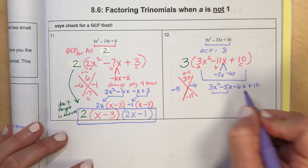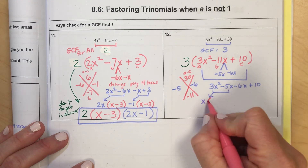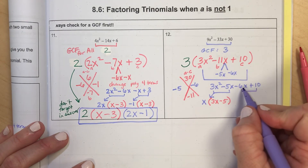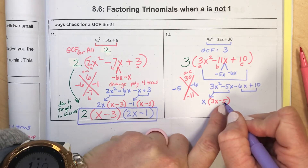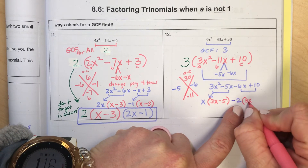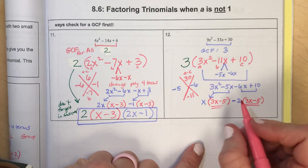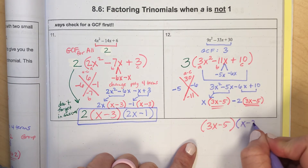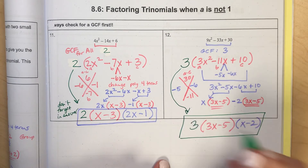So the polynomial becomes 3X squared minus 5X minus 6X plus 10. Order of the middle terms won't matter. Factor by grouping: from the first two terms, X is in common, leaving 3X minus 5. In the next two terms the signs are opposite of what I want, so I pull out negative 2, making the front term positive 3X and the second term negative 5, so they match. One factor is 3X minus 5, the other is X minus 2. Don't forget the GCF of 3 pulled out originally. That is how you factor a trinomial.